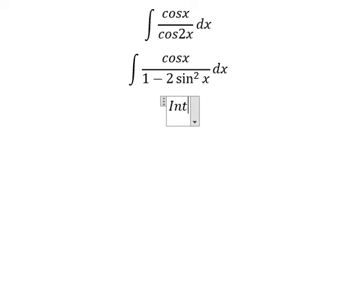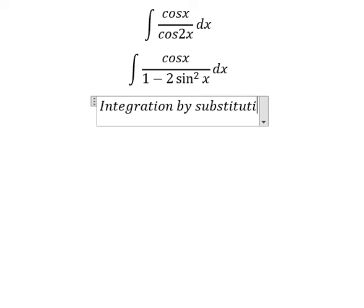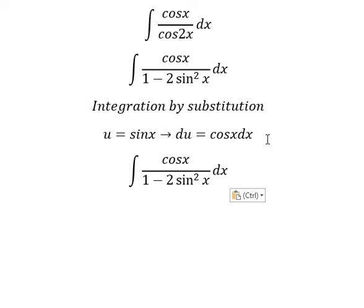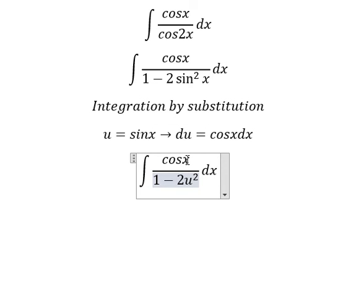So I will put u equals sin x. If we differentiate both sides, we have du equals cos x dx. We change this to 1 over 1 minus 2u squared. Cos x dx we change for du.